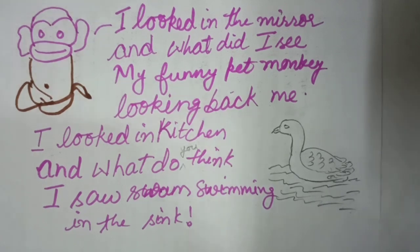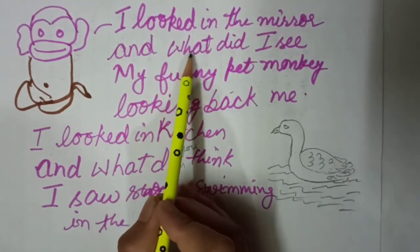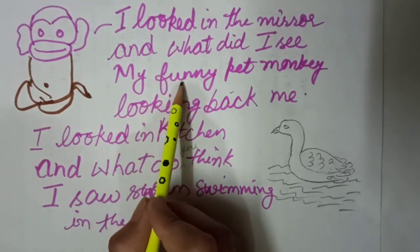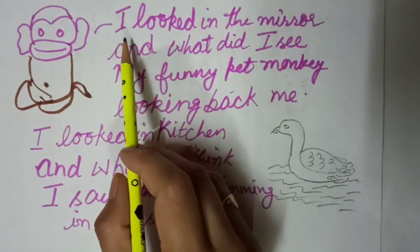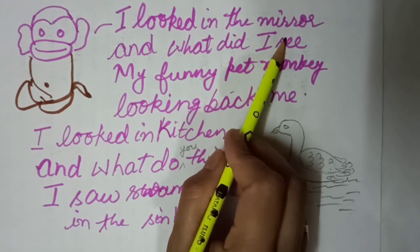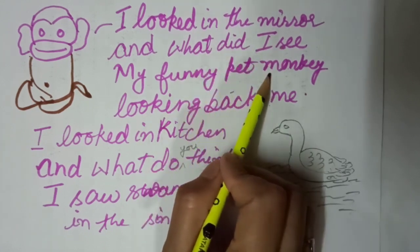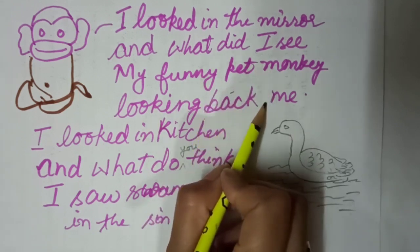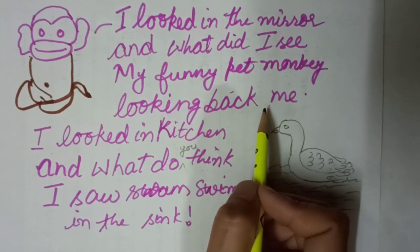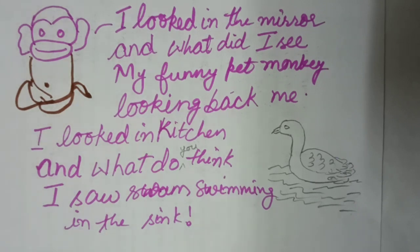My Pets. 'I looked in the mirror and what did I see? My funny pet monkey looking back at me.' So in the first stanza you came to know about the pet that is monkey. I looked in the mirror and what did I see — my funny pet monkey looking back at me. He saw me behind me.